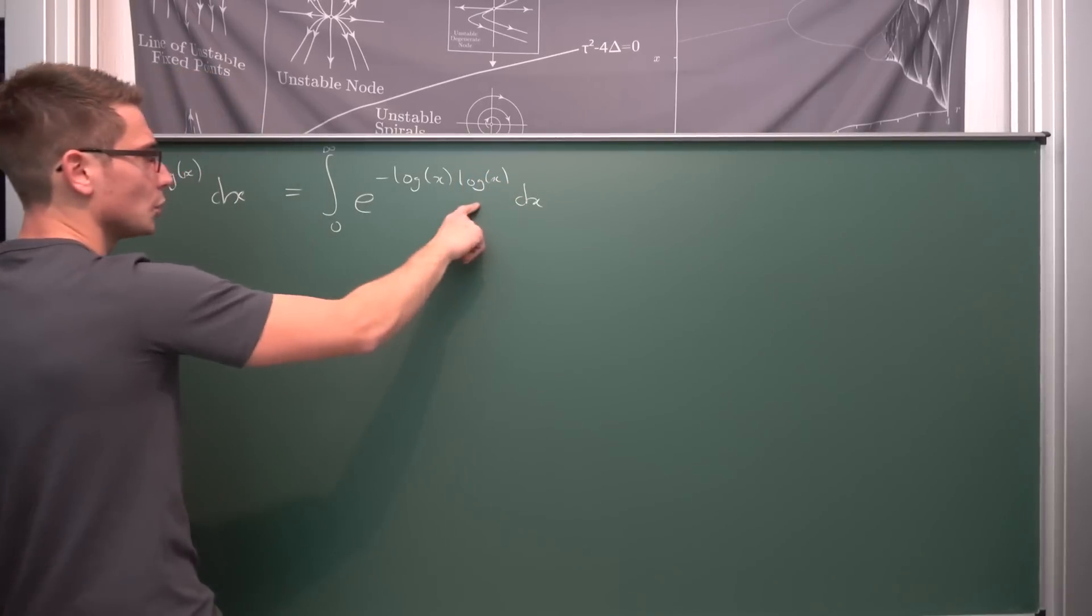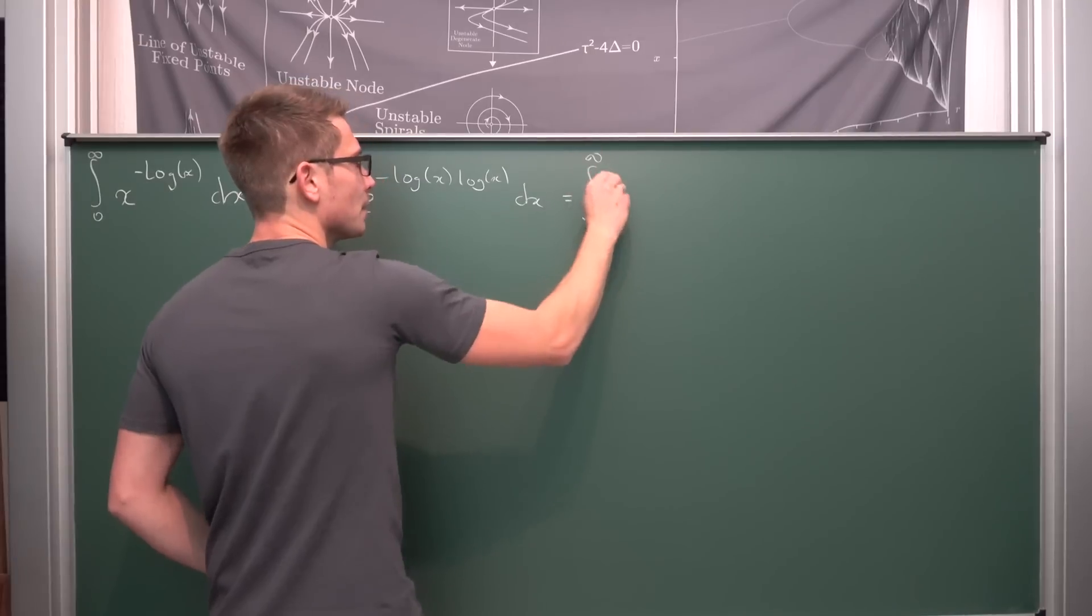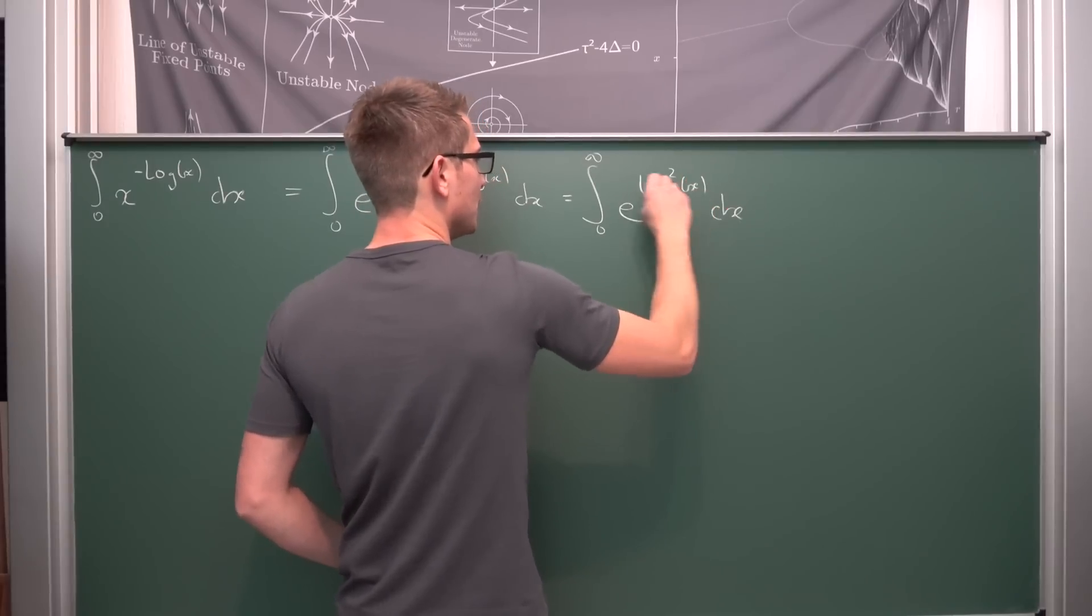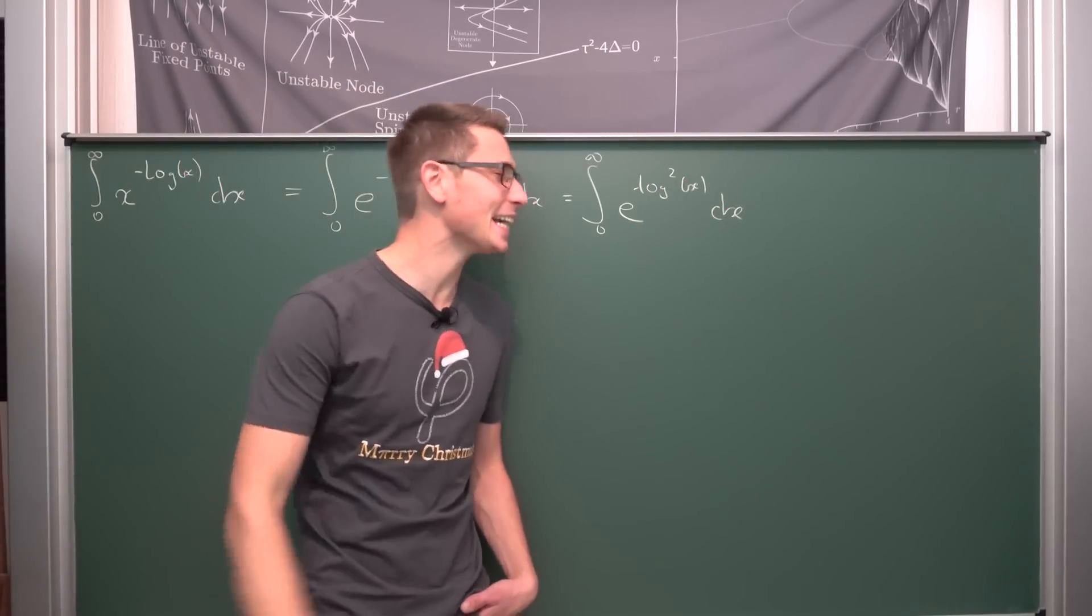Bring it to the front and multiply it with the other logarithm of x, dx. This is just log squared, giving us the integral from zero to infinity of e to the negative natural log squared of x dx. We shall not forget the negative sign.